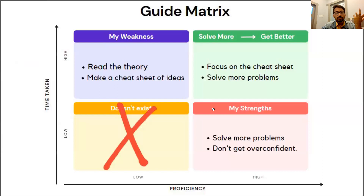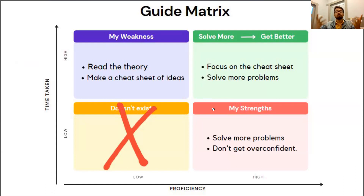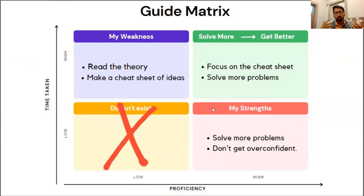Then, for weaknesses, you read more theory and make cheat sheets. For the solve more and get better topics, you solve more problems and focus on the cheat sheet. For strengths, you solve more problems but don't get overcome — people get complacent and make mistakes, so don't do that. These are the guide metrics of your mental models that you should be following.